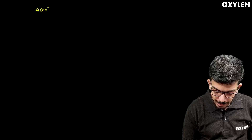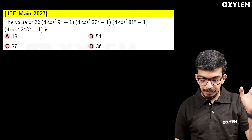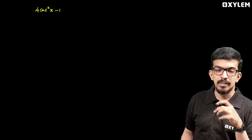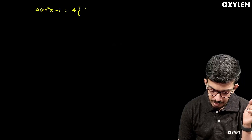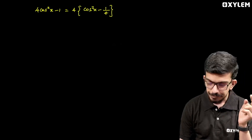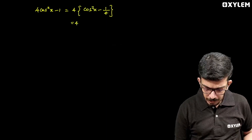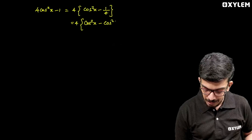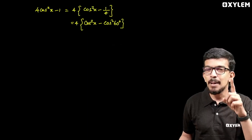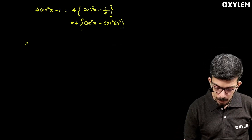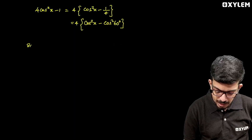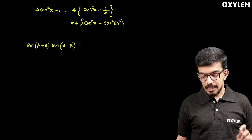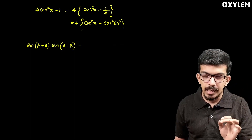Let's analyze 4cos²9° − 1, and more generally 4cos²x − 1. I'm going to look at this expression and try to make sense of it. We can write 4cos²x − 1 as 4(cos²x − 1/4), which equals 4(cos²x − cos²60°).